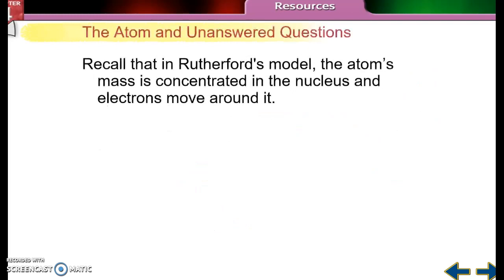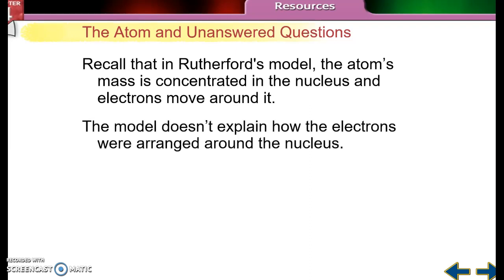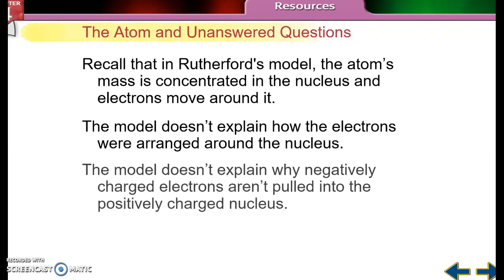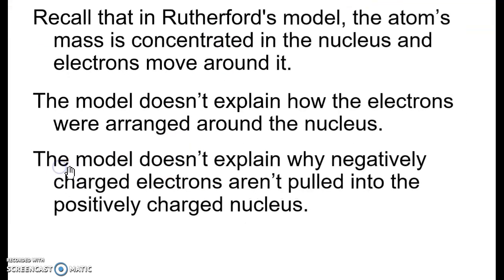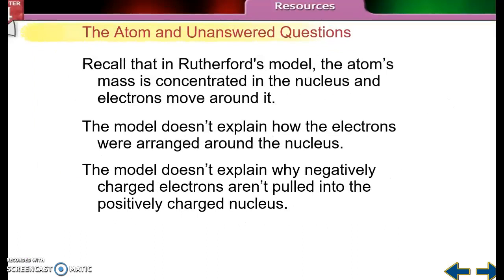We know that from Rutherford's model, the atom's mass is concentrated in the nucleus and the electrons move around it. But it didn't explain how the electrons were arranged around the nucleus. And it also, and this is a big deal, doesn't explain why the negatively charged electrons aren't pulled into the positively charged nucleus.